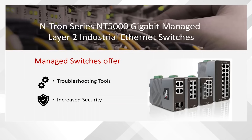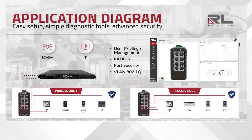To better understand how a managed switch allows us to increase security, let's take a look at an application diagram where an NT5000 Ethernet switch is used in two different process lines. Here we can see process 1 and process 2 connected together via an Ethernet cable, each housing multiple different industrial devices. Process line 1 is redundantly connected to the aggregation switch — the NT24K at the top — which connects to the SCADA and the IT department.